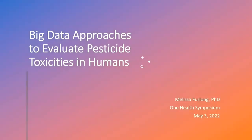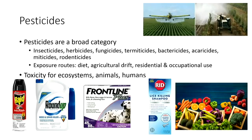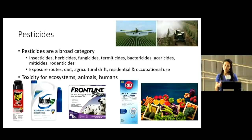Today, I'm going to be talking about big data approaches to evaluate pesticide toxicities in humans. Pesticides are a really broad category of chemicals. They include insecticides, herbicides, fungicides, and several different types of biocides.